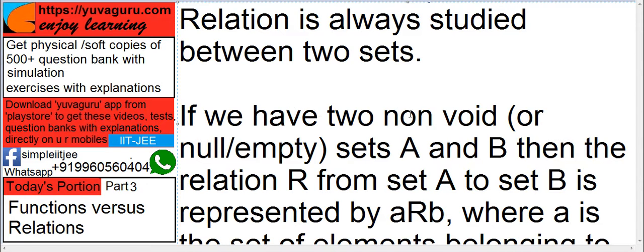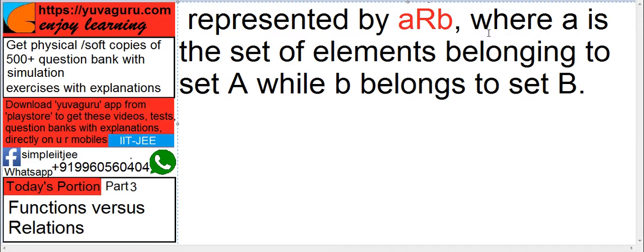So, if we have two non-void sets A and B, then the relationship R between the set A to set B is represented as aRb. See, this way it is represented. ARB. This is set A, this is set B and this is the relationship. Remember, this a and b are written as small. They are not written as capital. Where a is the set of elements belonging to set A, while b is the set of elements belonging to set B.